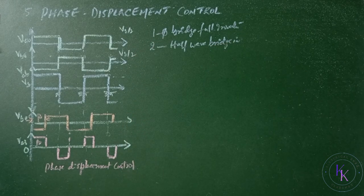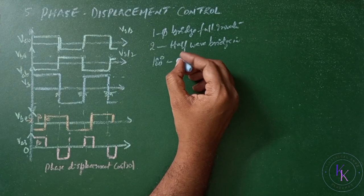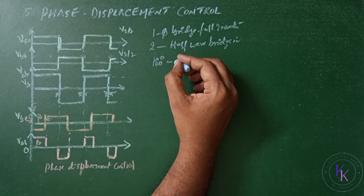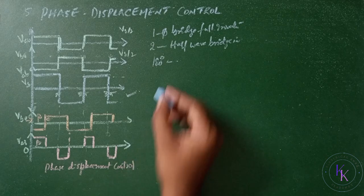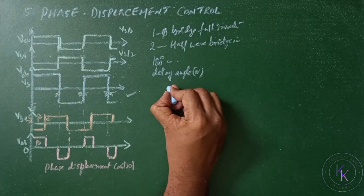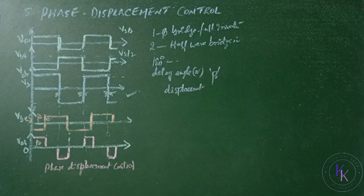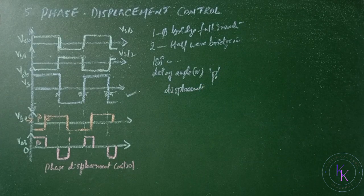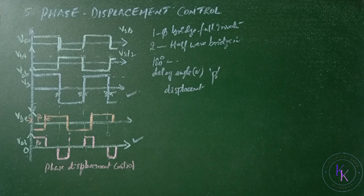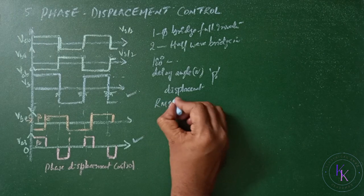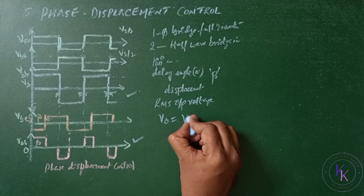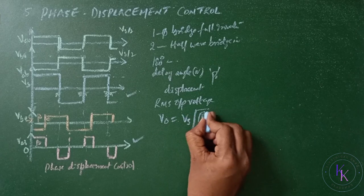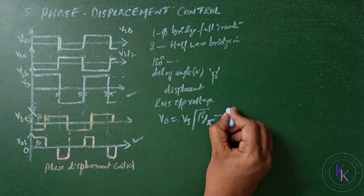A 180 degrees displacement produces an output voltage shown in the figure, whereas a delay angle of beta or displacement angle beta produces an output as shown here. The RMS output voltage V0 equals Vs times square root of beta by pi. Let it be equation number one.